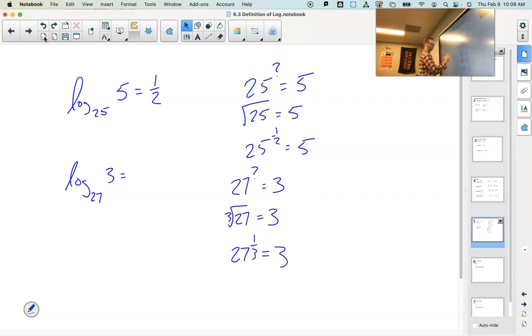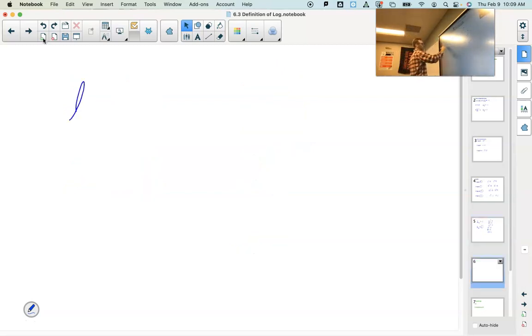Well, I know the cube root of 27 is 3, because 3 cubed is 27, and the cube root is the same as the 1 third power.